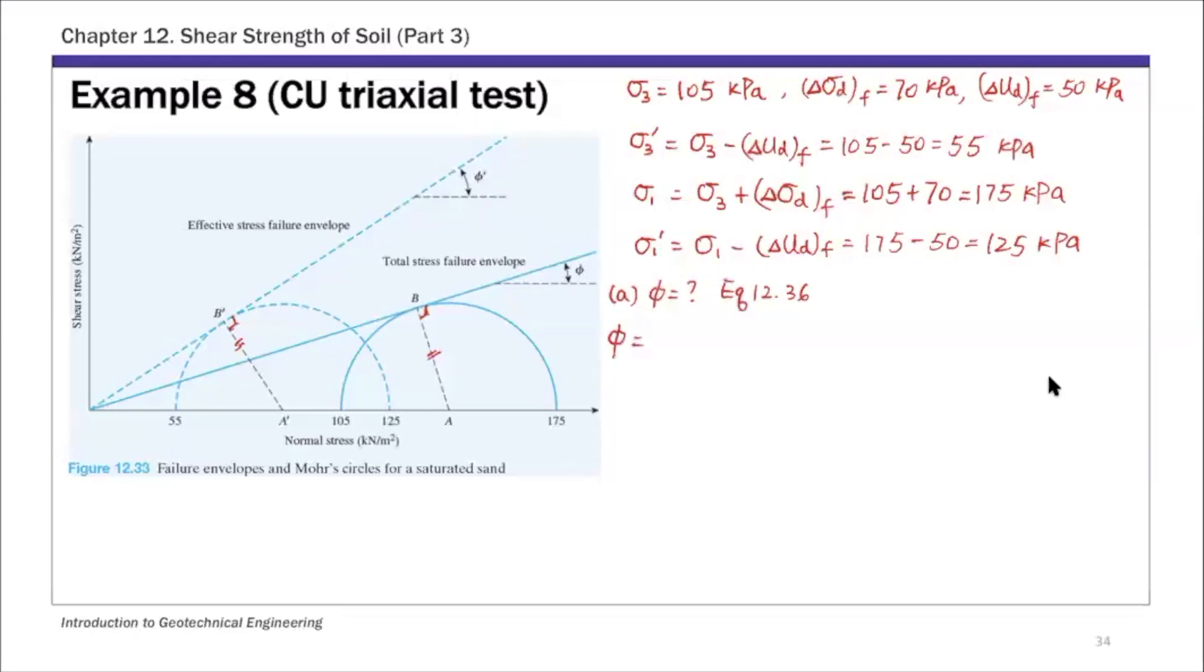We're going to use equation 12.36. The total stress or undrained friction angle phi is sine inverse of (sigma 1 minus sigma 3) over (sigma 1 plus sigma 3). Substituting these total stress values, 175 and 105, this equals 14.5 degrees.